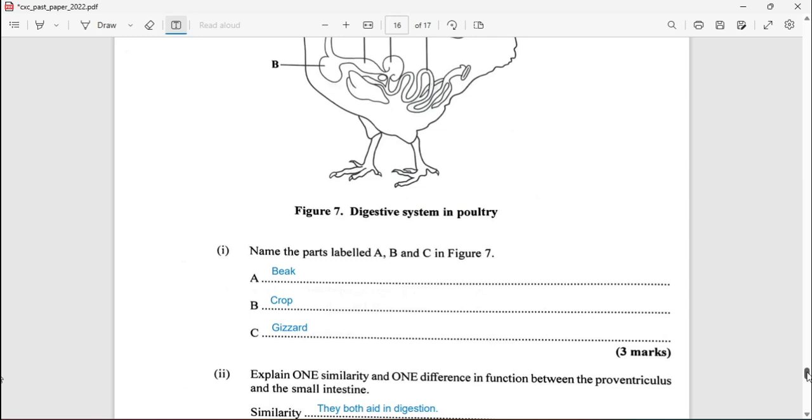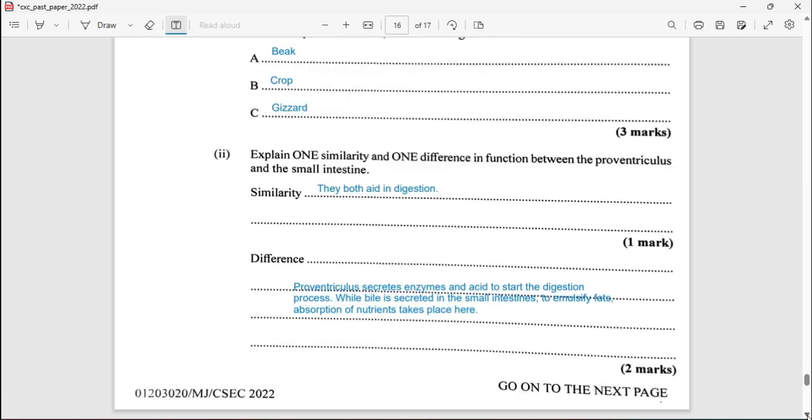Explain one similarity and one difference in function between the proventriculus and small intestine. We're looking at function, so they are similar in their function as they both aid in the process of digestion.